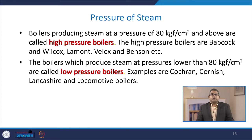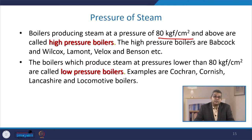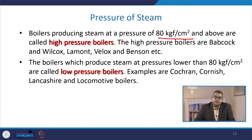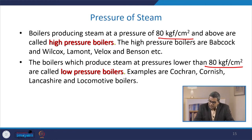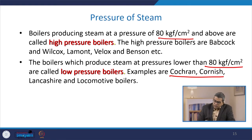Boilers producing steam at pressures of 80 kilogram-force per centimeter square and above are called high pressure boilers — examples include Benson, Velox, Wilcox, and Lehmann boilers. Low pressure boilers operate below 80 kgf/cm². You may also embed a medium pressure category between low and high pressure. Examples of low pressure boilers include Cochrane, Cornish, Lancashire, and locomotive boilers.